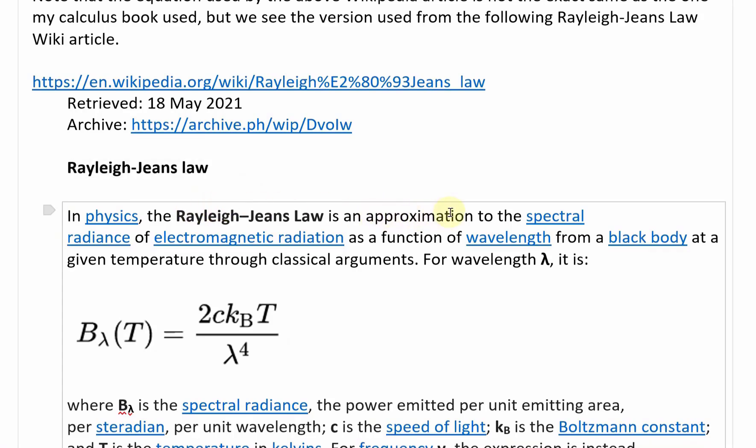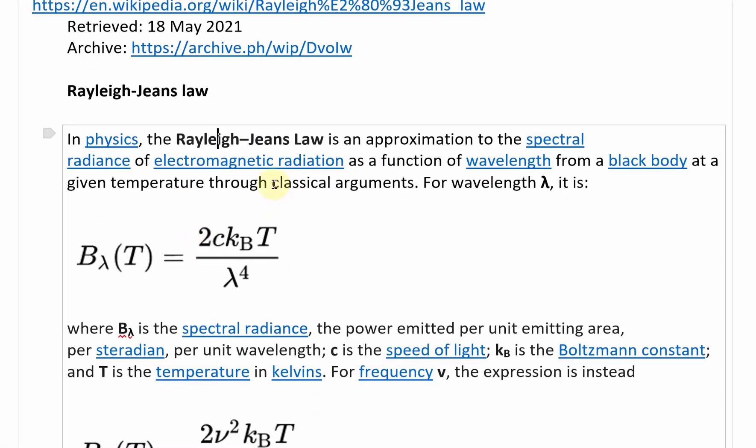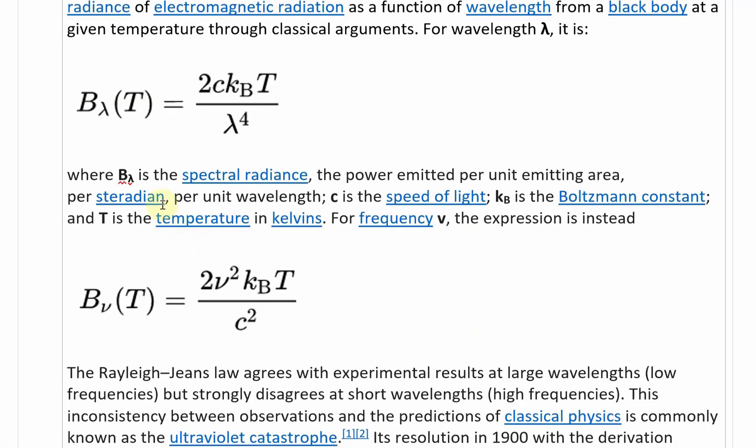In physics, the Rayleigh-Jeans law is an approximation to the spectral radiance of electromagnetic radiation as a function of wavelength from a blackbody at a given temperature through classical arguments. For wavelength λ, it is the spectral radiance Bλ at a given temperature equals 2CKbT divided by λ⁴.